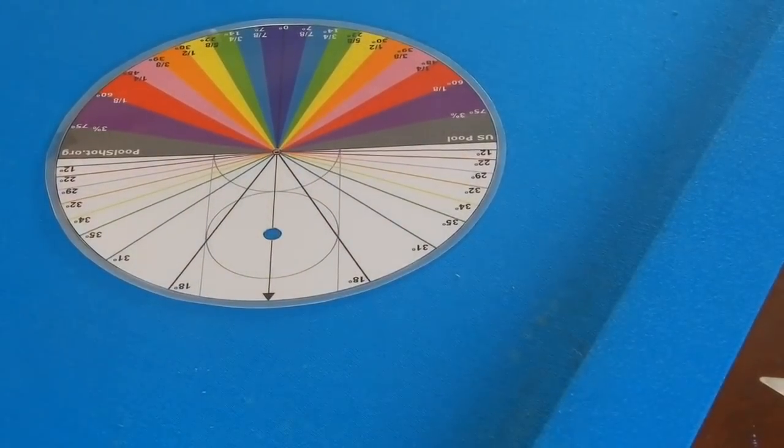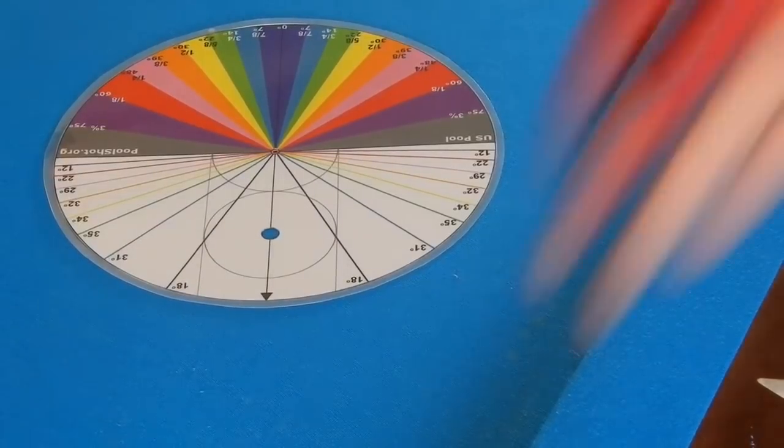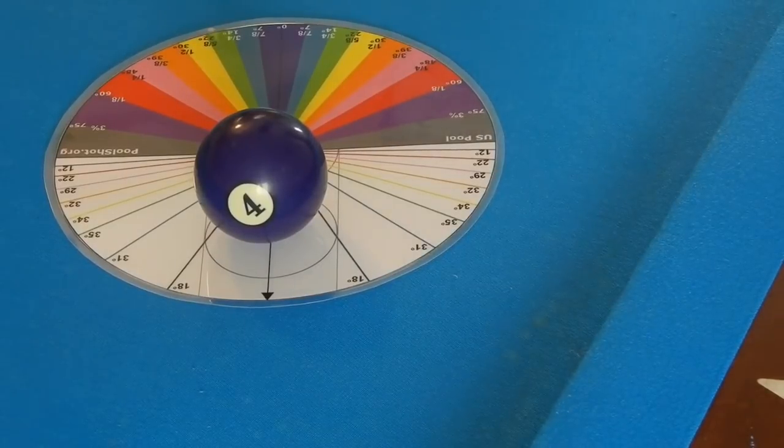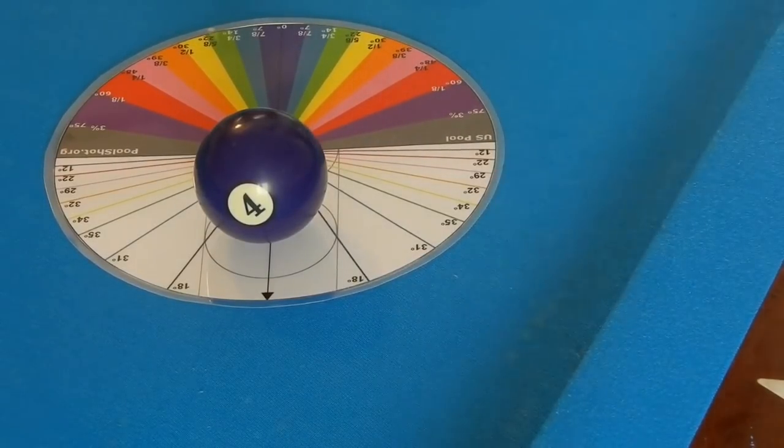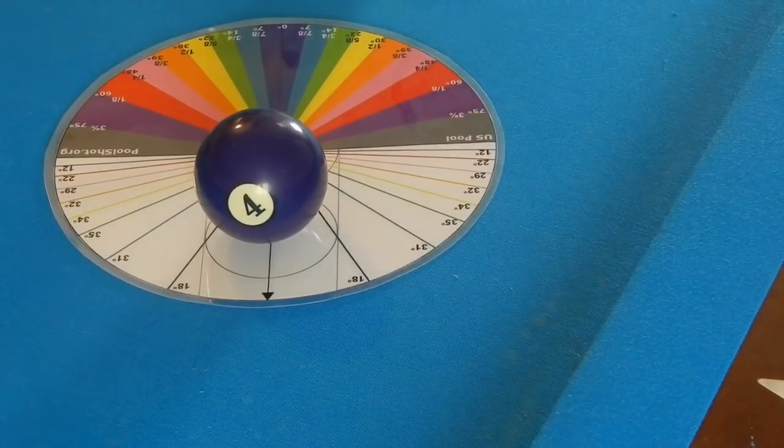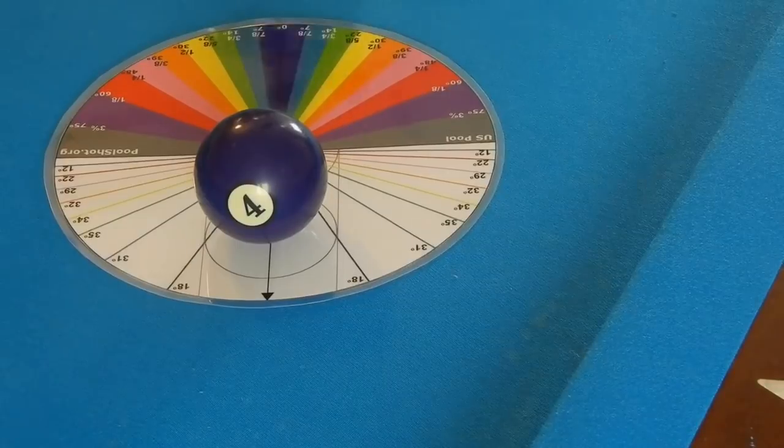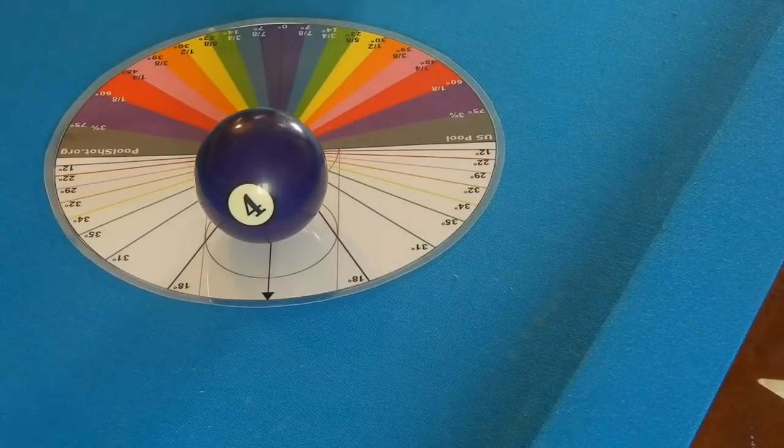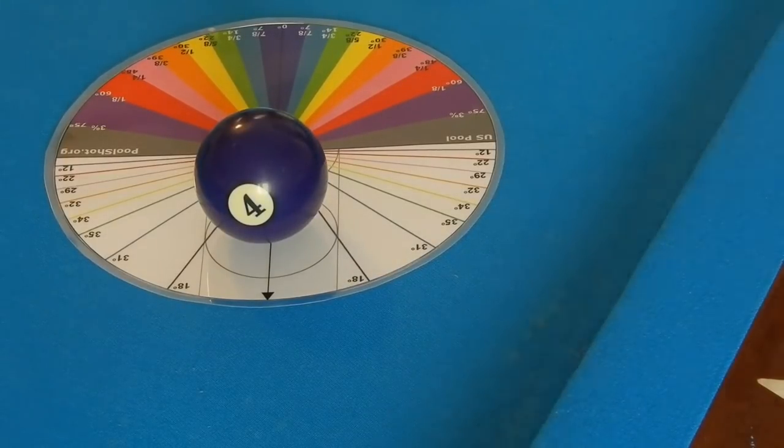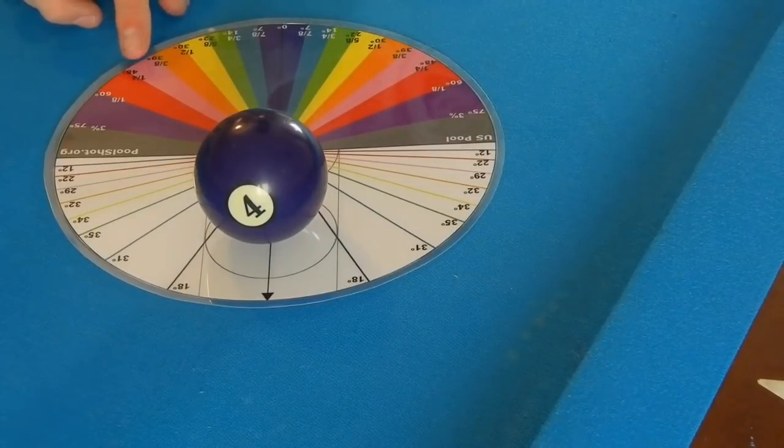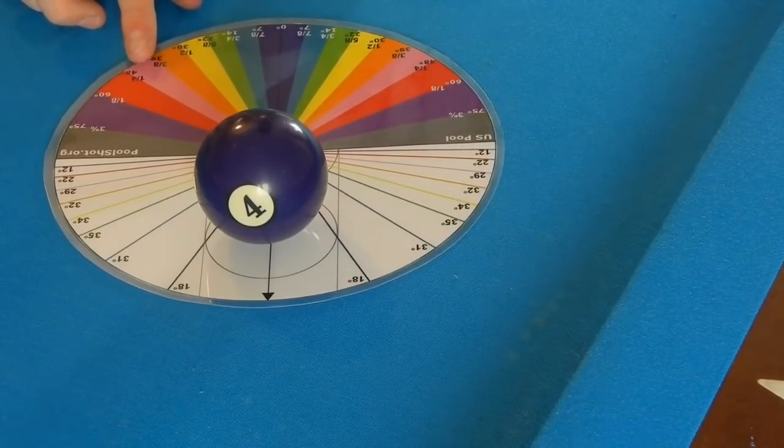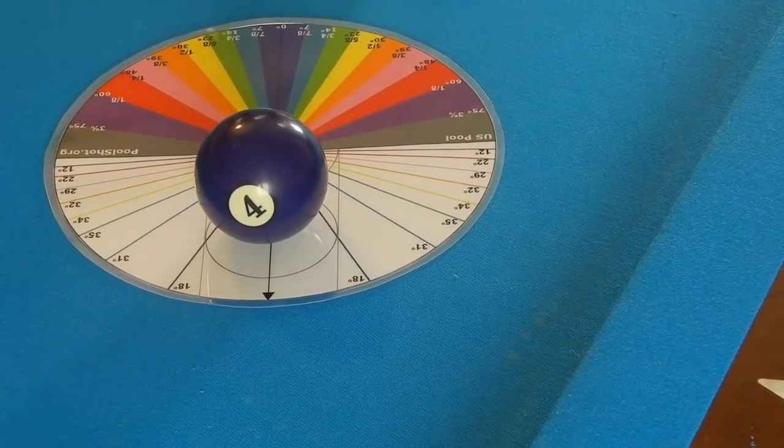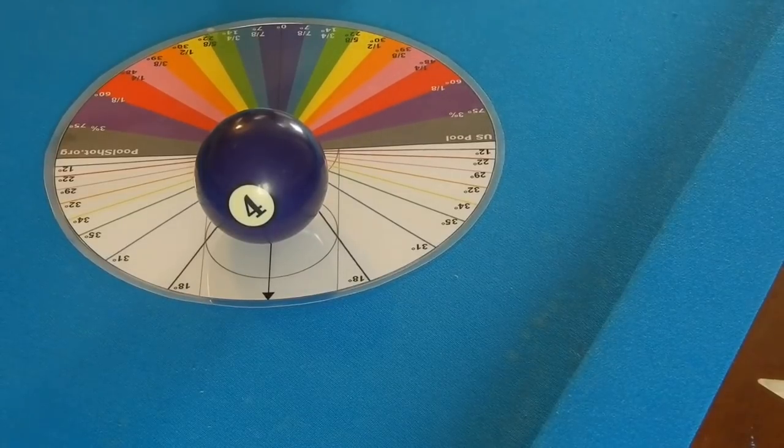Let's get into some close-up view. Right here we are going to be using a draw stroke, so backspin. Let's go along the 14-degree line. Our rule is multiply the cut shot angle by three to get which angle it's going to draw back on. 14 times 3 is 42, so we should find our 42-degree mark. It's in between 39 and 48, so about right here on this pink is where we should draw back.